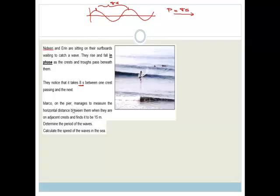Marco on the pier manages to measure the horizontal distance between them when they are on adjacent crests and finds it to be 15 meters. So in other words, if Nadine is sitting here and Erin is sitting here, Marco has measured this and he says that is 15 meters. Determine the period of the waves. Done. Calculate the speed of the waves.